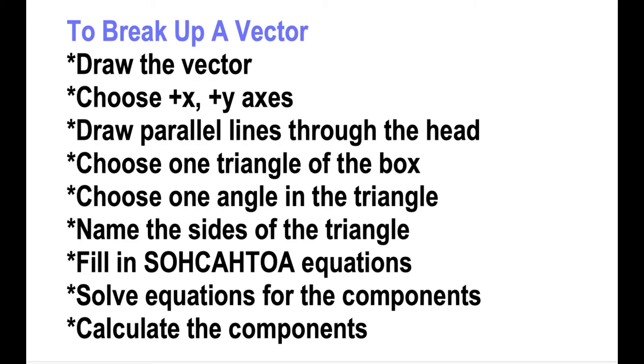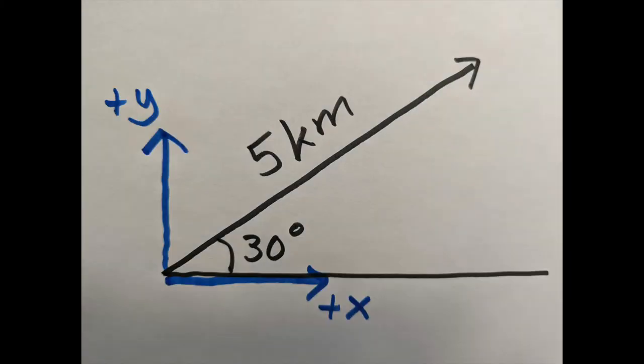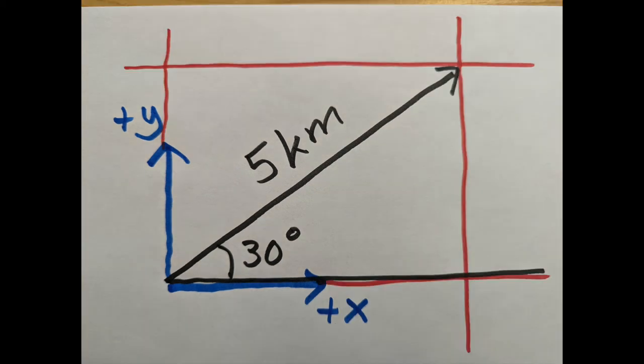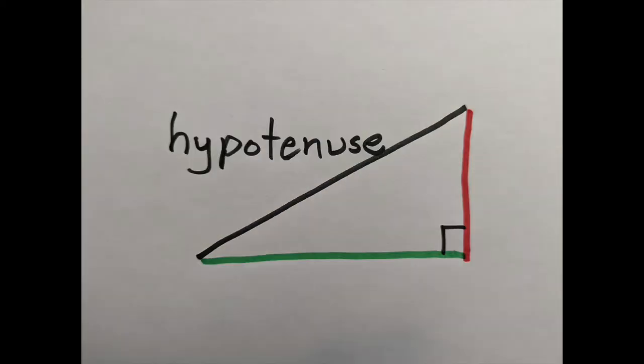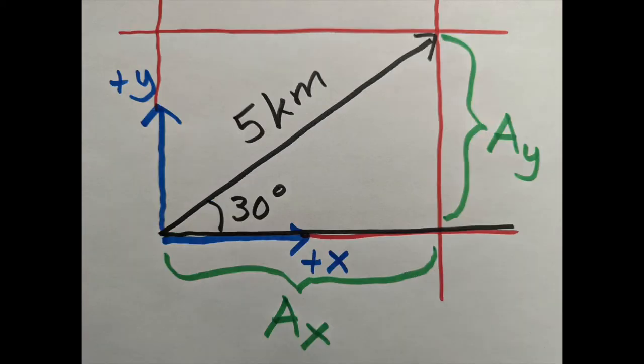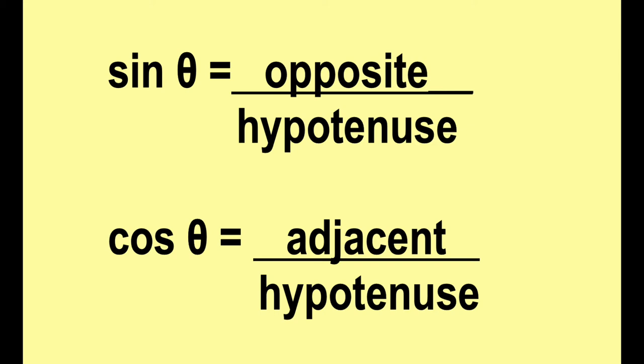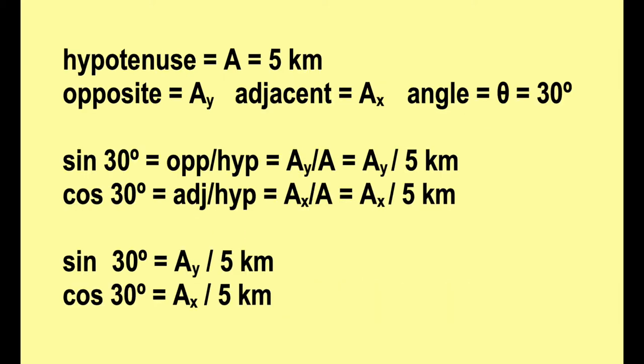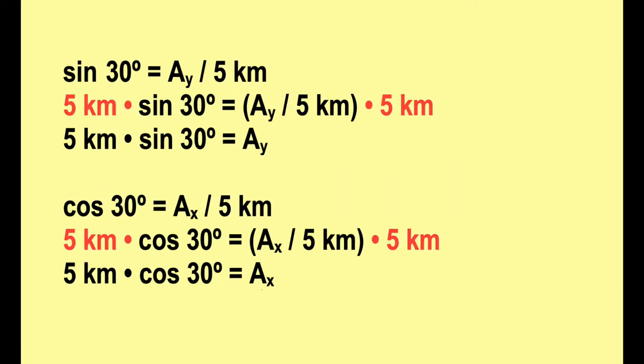Here's a list of all the steps we went through. We draw the vector. We choose the xy axes. We draw parallel lines through the head. We choose one triangle of the box. We choose one angle in the triangle. We name the sides of the triangle. We write the Soh-cah-toa equations. We fill them in. We solve the equations for the components, and then we calculate the components.